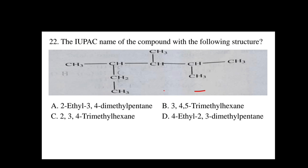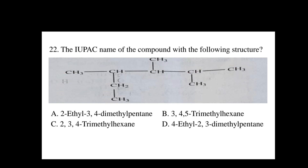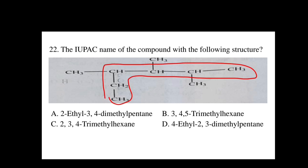The longest continuous chain contains the alkene. We number the chain to give the functional group the smallest number. The branch should also receive the smallest possible number.